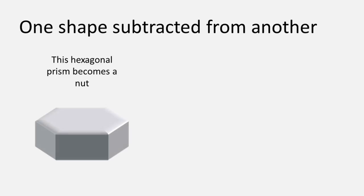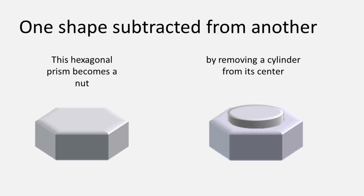Composite shapes can also be formed when one shape is subtracted from another. This hexagonal prism becomes a nut by removing a cylinder from its center.